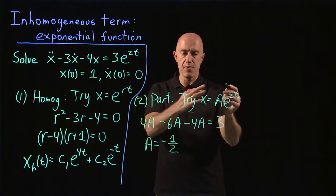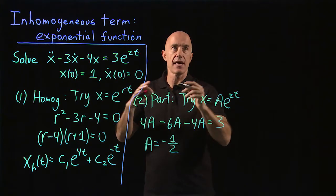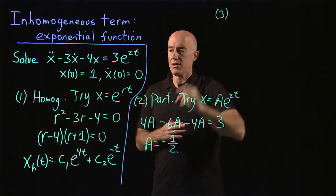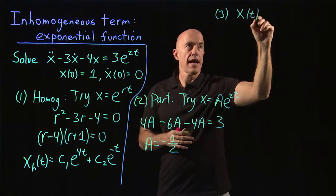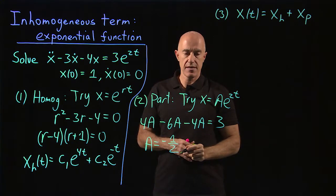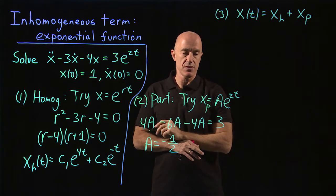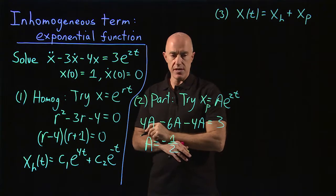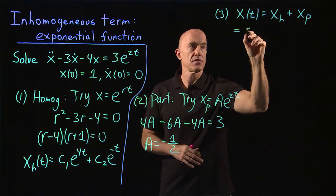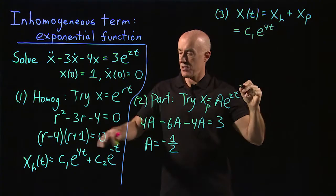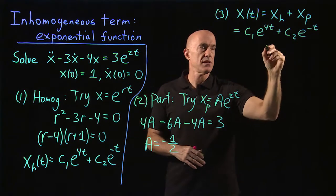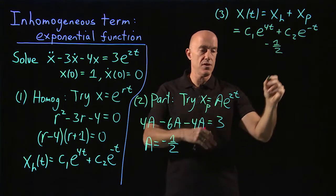We've found both the homogeneous and particular solutions. Step 3 is to write x as the sum of the homogeneous solution plus the particular solution. So x equals c1 e to the 4t plus c2 e to the minus t, plus the particular solution: minus 1 half times e to the 2t.